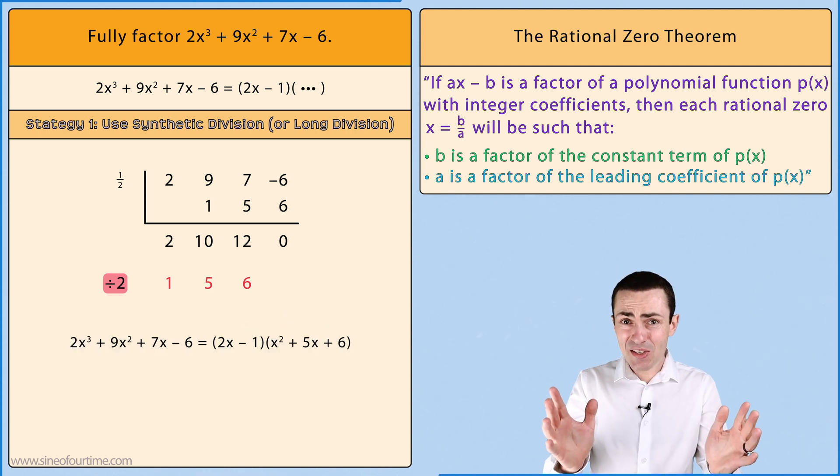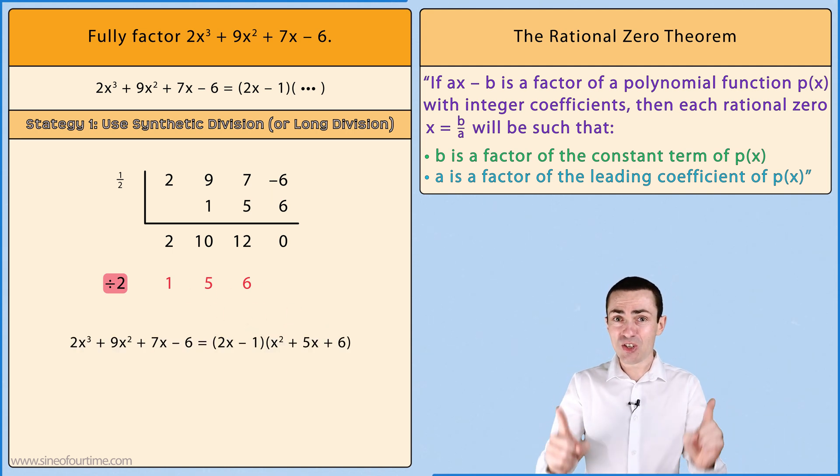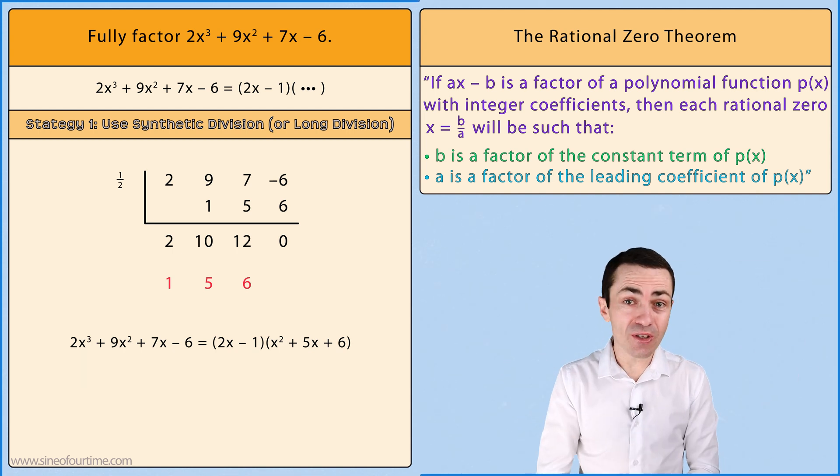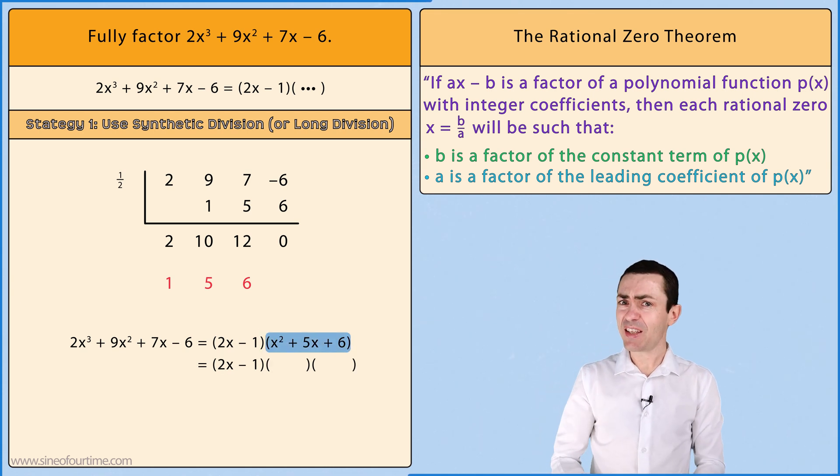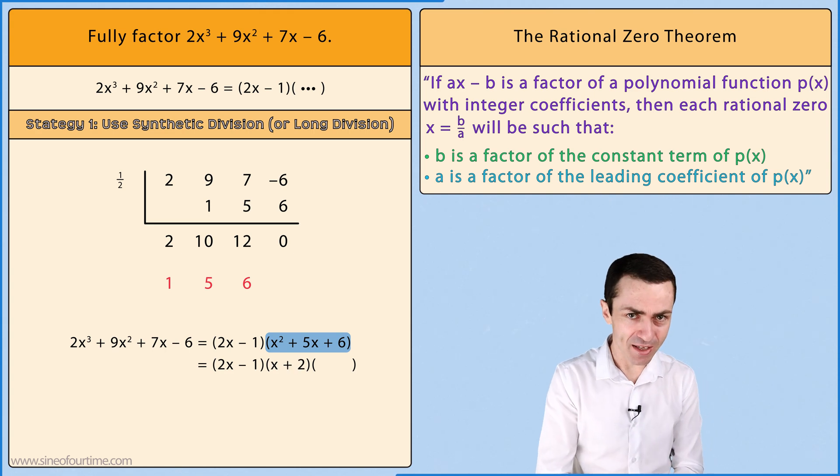Now if you're not sure why this is done then I recommend that you check out the video in the link above. Now we just need to focus on x² + 5x + 6 which is a quadratic that can easily be factored to give us (x + 2)(x + 3). At this stage we have fully factored this polynomial.